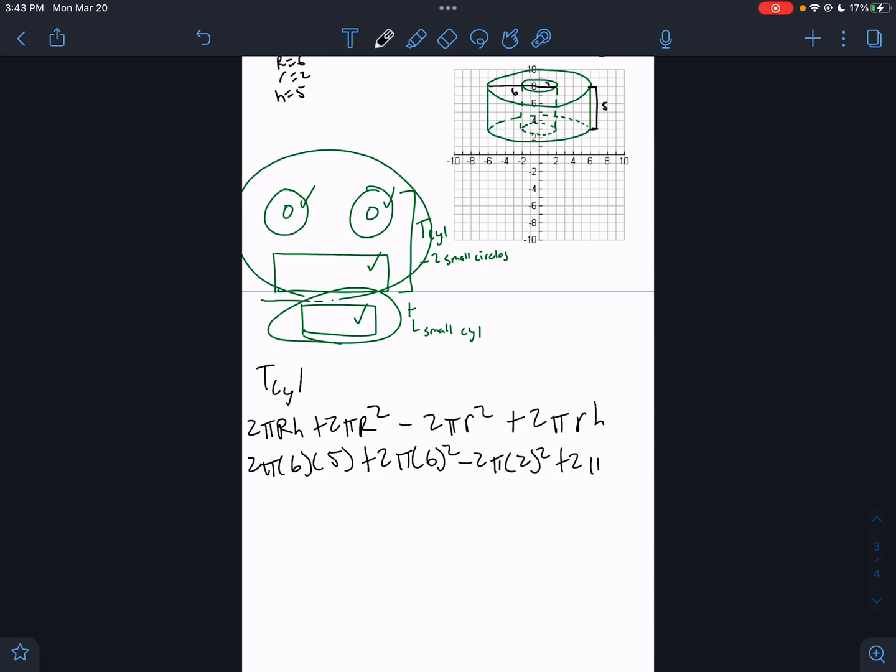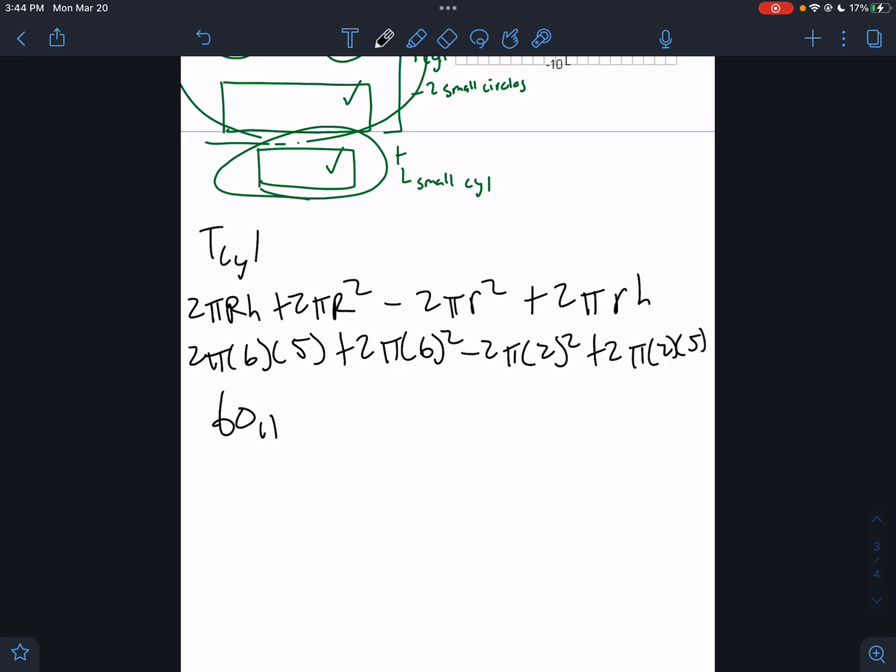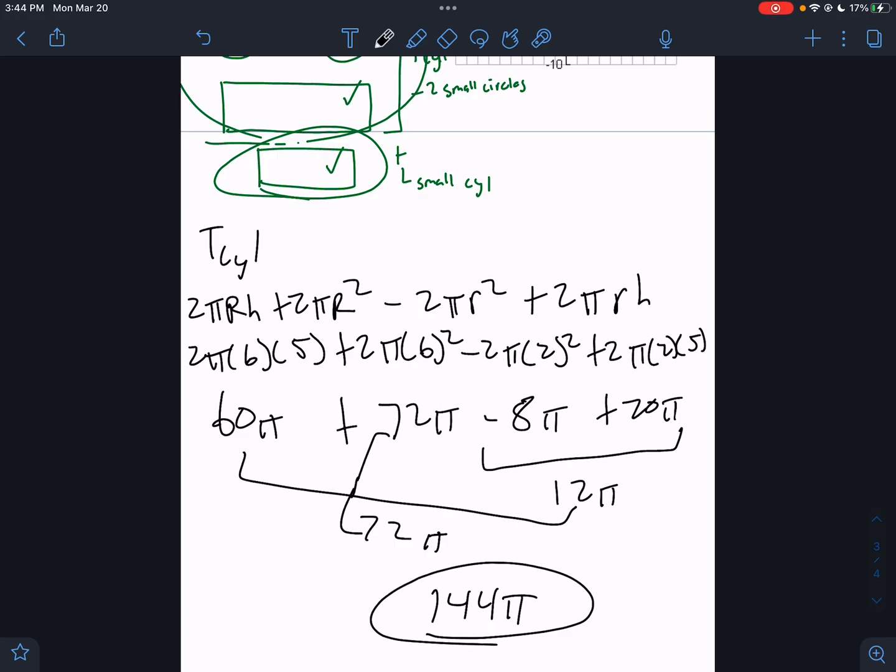That would be 60 pi plus 72 pi minus 8 pi plus 20 pi. Those are all pi. We can combine all these. What's a good way to split this? This is what I've been doing in class. This would be 12 pi. These together would be 72 pi. And then those together would be 144 pi. There we go.